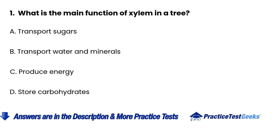Question 1: What is the main function of xylem in a tree? a. To transport sugars. b. To transport water and minerals. c. To produce energy. d. To store carbohydrates.